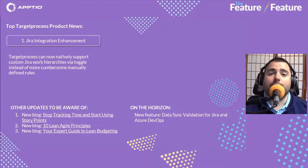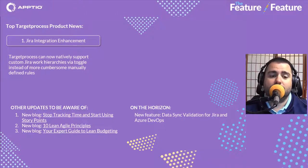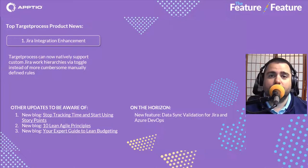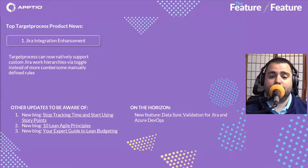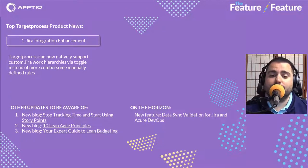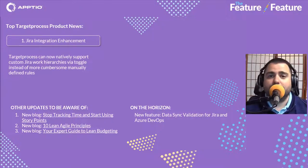We have three new blog posts around Target Process and agile practices on our blog — definitely head over to check those out. There'll be links posted to YouTube as well, or just go to Aptio under Resources and navigate to the blog. On the horizon, data sync validation for Jira and Azure DevOps is also coming, to confirm and validate that data is transferred correctly when you make those connections.